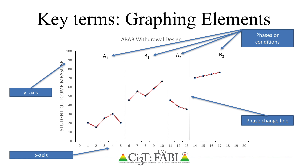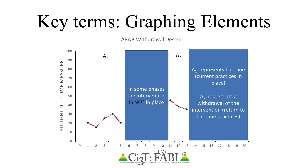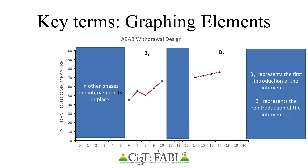Notice how data points are not connected by a line between phases, as you see in this example. In an ABAB or withdrawal design, the behavior of interest is measured with or without the intervention in place. In this illustration, A1 represents baseline where current practices are in place, B1 illustrates the introduction of the intervention, A2 represents a withdrawal of the intervention such as a return to those baseline practices, and B2 represents the reintroduction of the intervention. Using visual analysis, we can determine the occurrence of the behavior of interest when the intervention is and is not in place. That is how we determine if a functional relation exists between the introduction of the intervention and changes in student behavior.